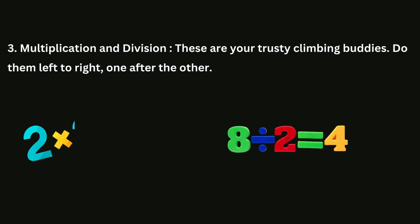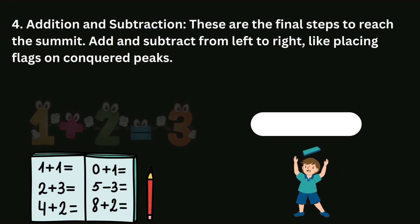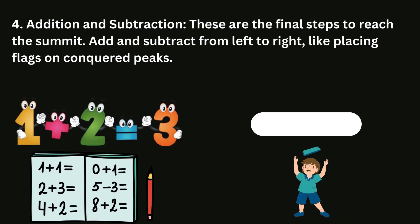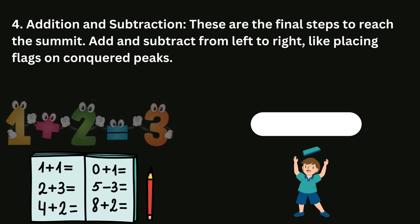3. Multiplication and division. These are your trusty climbing buddies. Do them left to right, one after the other. 4. Addition and subtraction. These are the final steps to reach the summit. Add and subtract from left to right, like placing flags on conquered peaks.